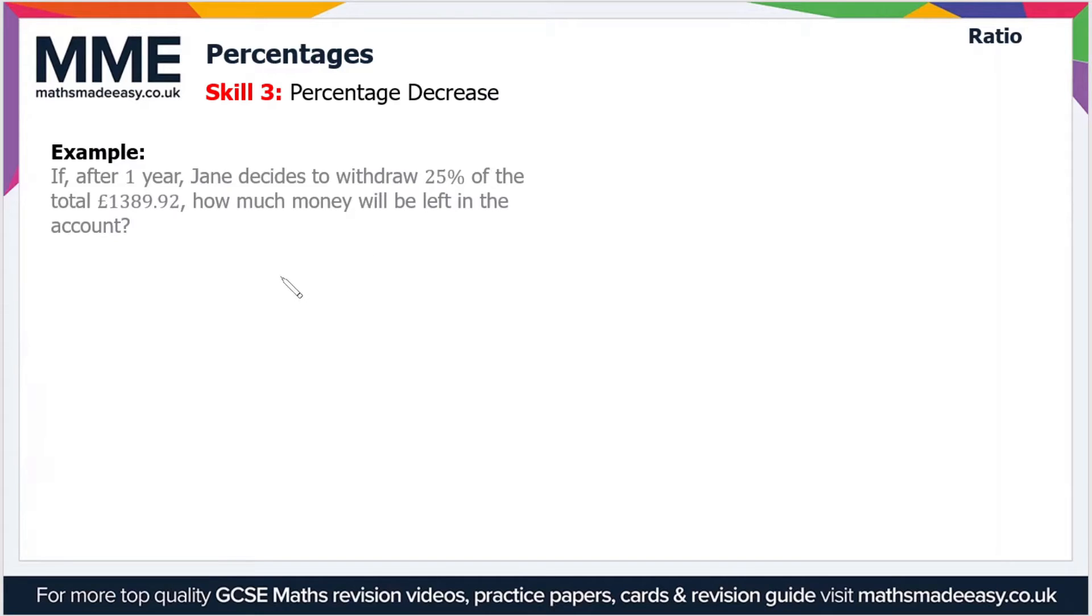Because it's a decrease this time, we have to multiply by a number which is less than one. So first of all, let's convert this 25% into a decimal. 25% equals 0.25.